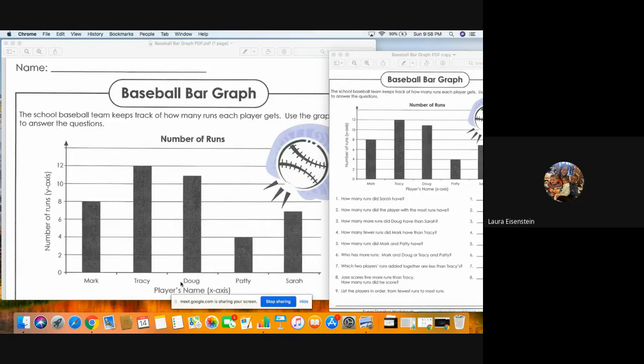So each player on the team, we have Mark, Tracy, Doug, Patty, and Sarah. And if you look at the numbers, the graph is counting by twos. So if it's in between...